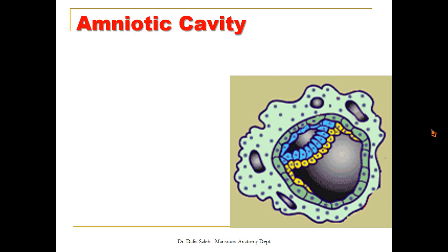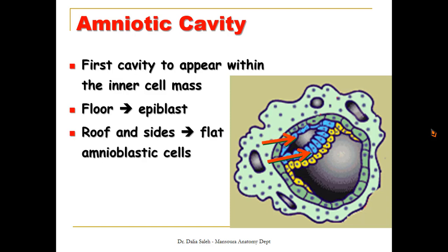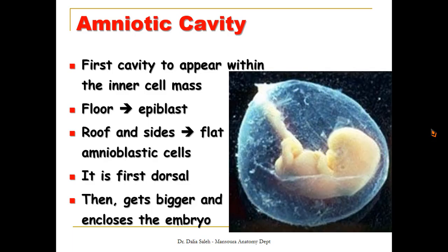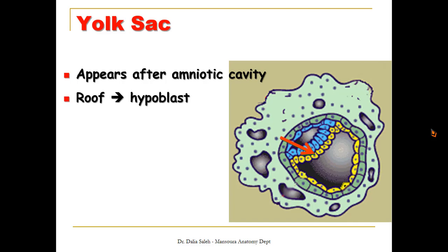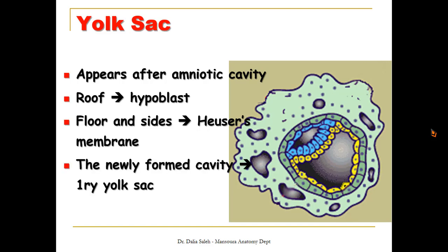The amniotic cavity is the first cavity to appear within the inner cell mass. Its floor is made by the epiblast, and its roof and sides are formed by flat amnioblastic cells. It is first dorsal and then, after folding of the embryo, it grows and completely encloses the embryo. The second cavity is the yolk sac cavity, whose roof is made by the hypoblast and whose floor and sides are made by a membrane called Heuser's membrane. This newly formed cavity is called the primary yolk sac.